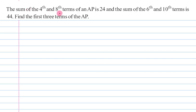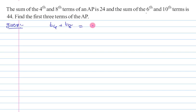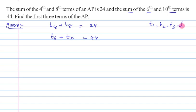The sum of the fourth and eighth terms of an AP is 24, and the sum of the sixth and tenth terms is 44. Find the first three terms of the AP. What is given: the sum of the fourth term and eighth term is 24, and the sum of the sixth and tenth terms is 44. From this, we need to find the first three terms — term one, term two, and term three.